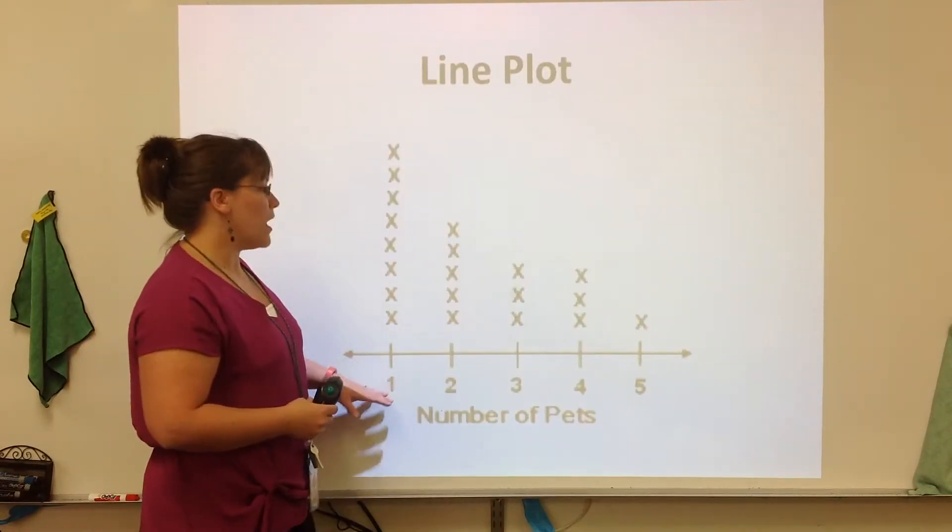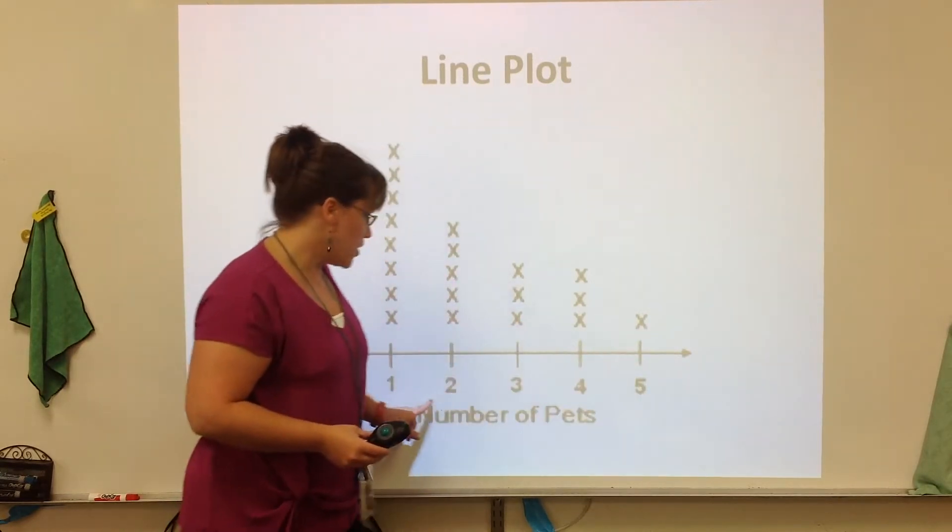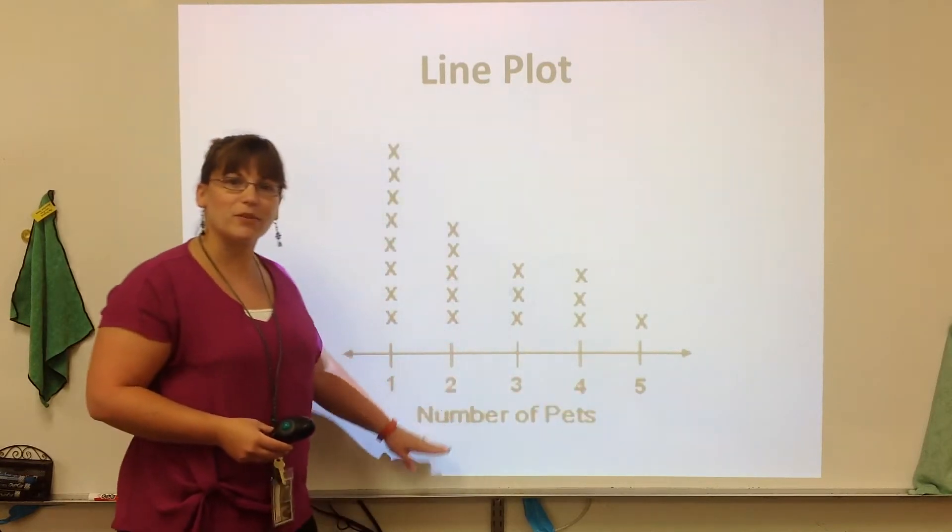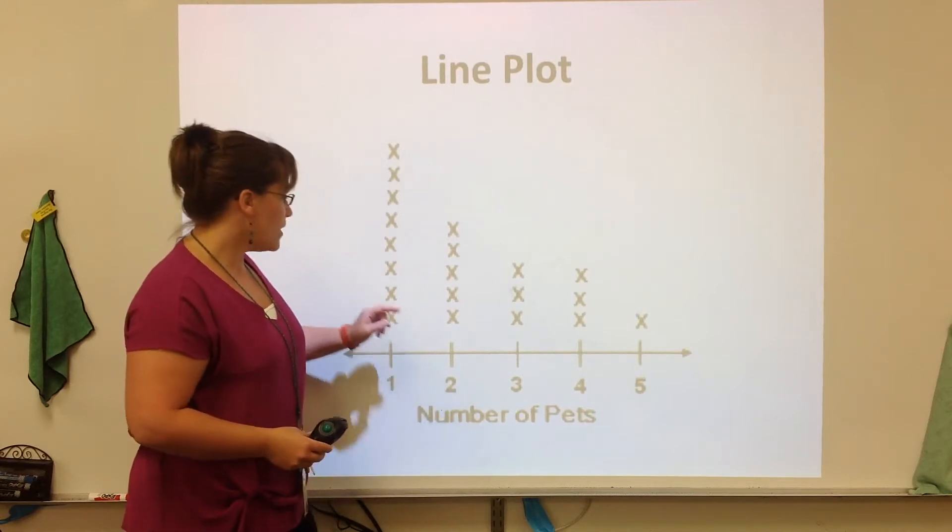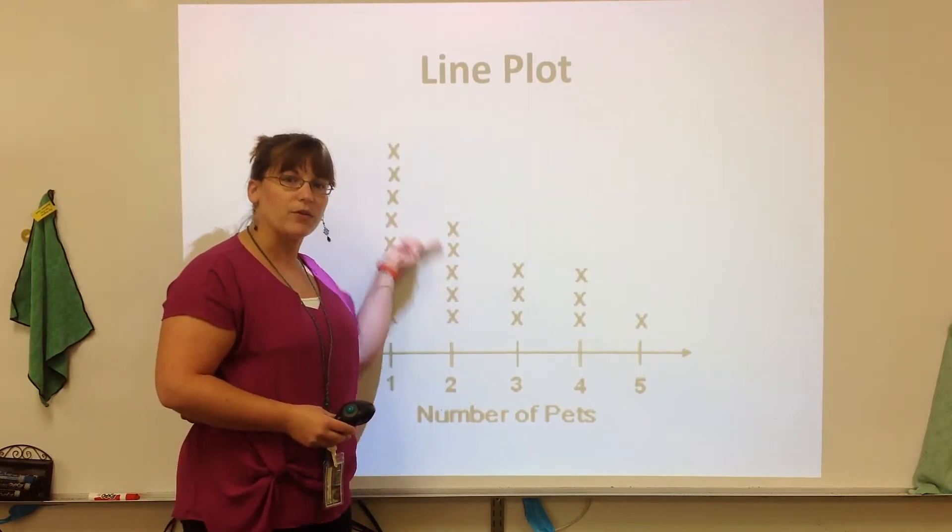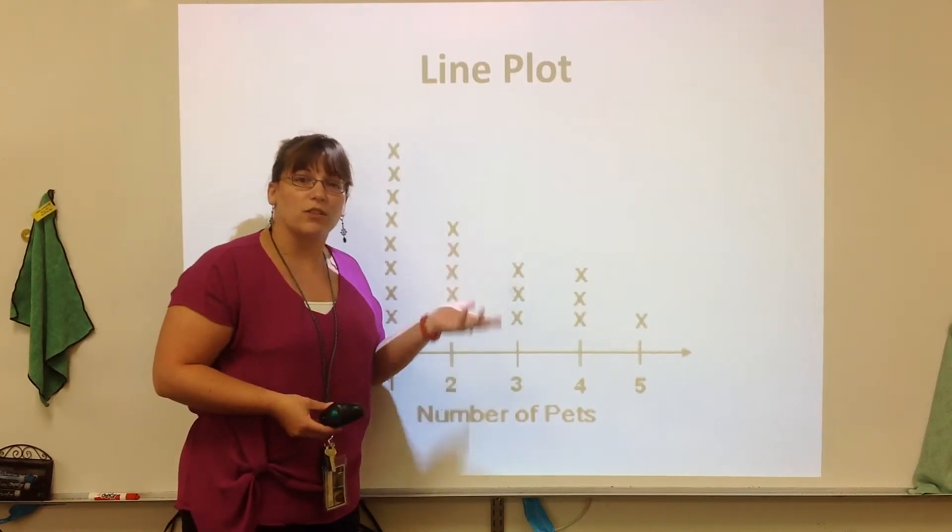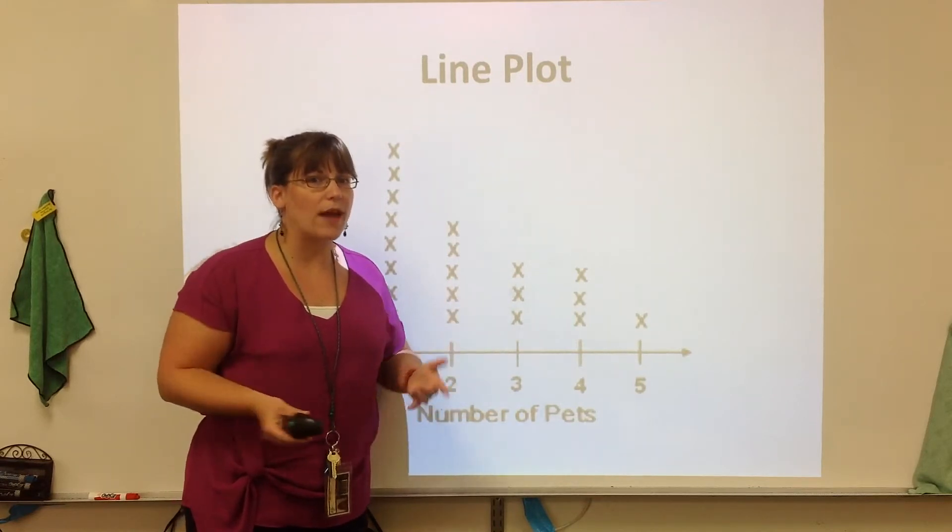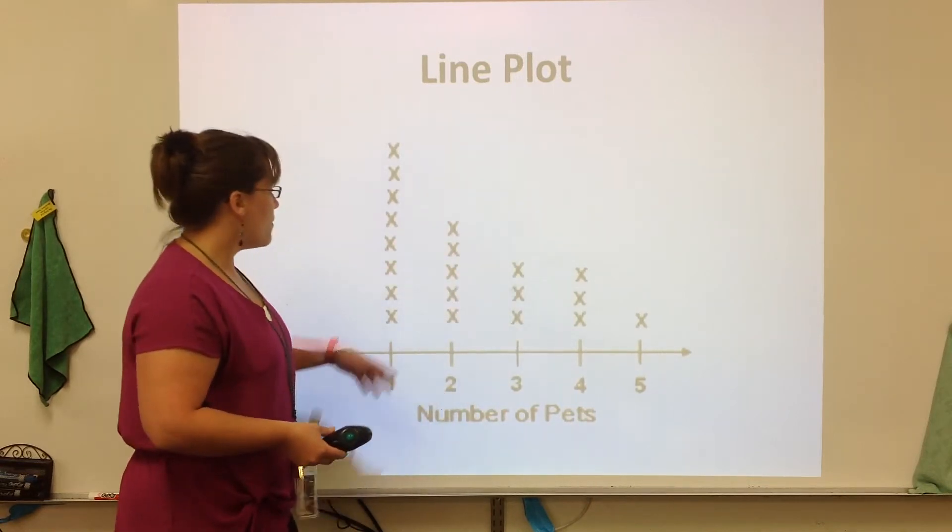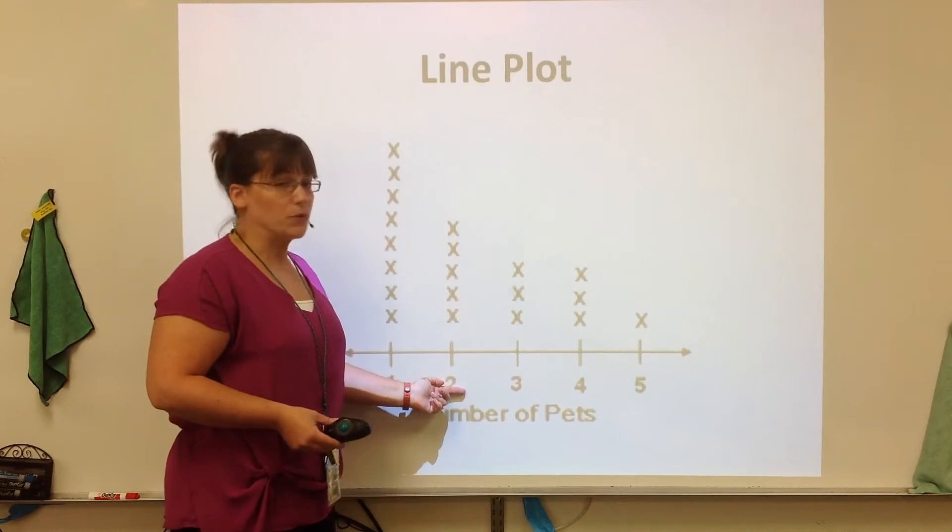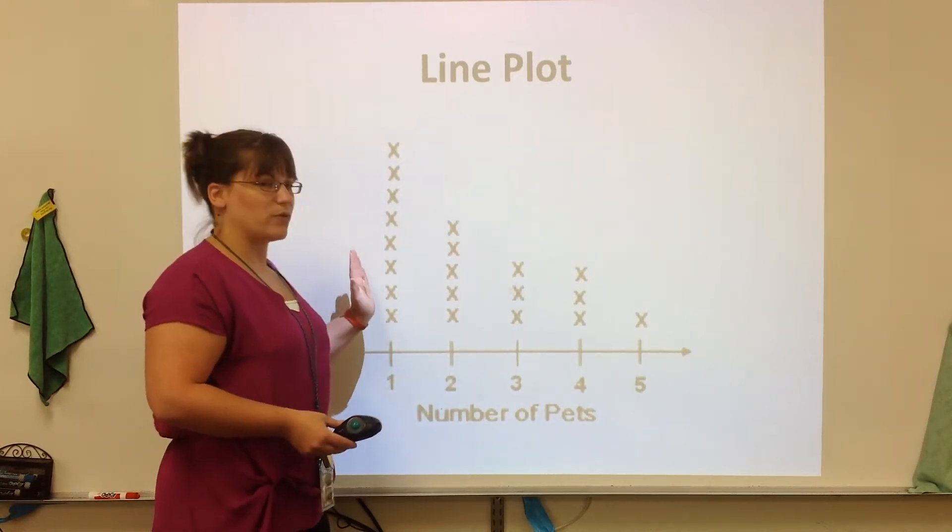What we have here are line plots. So a line plot has a number line, and it has numbers just like a regular number line underneath that pertain to a topic. It is labeled. Here our topic is number of pets. And you can see the x's going on top of each number. For this number three, three people actually answered this statistical question of how many pets do you have, and they have three pets. So there's actually three threes in this set of data. Please know that each data point is represented by an x.